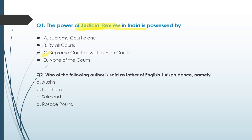Question number two: Who among the following authors is said to be the father of English jurisprudence? Option A is the correct answer — Austin. He is considered to be the father of English jurisprudence. This is also a direct question and option A is the correct answer.